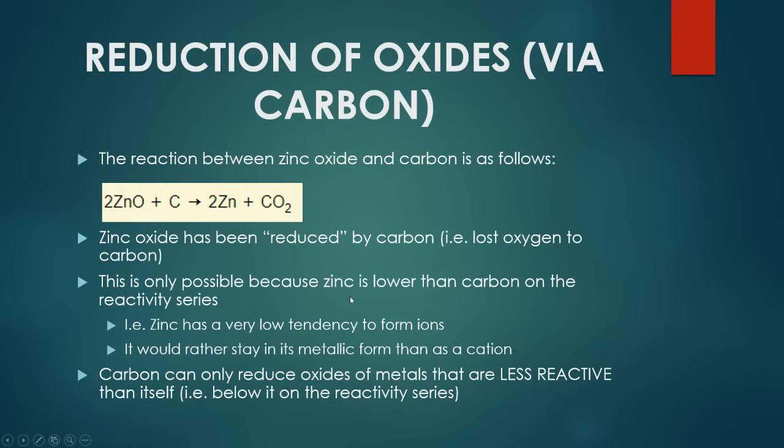This is only possible because zinc is lower in the reactivity series than carbon. Basically, carbon is more reactive than zinc. And remember, zinc being a fairly low metal of low reactivity suggests that zinc would much prefer to be in the elemental form rather than the ionic form because it has a fairly low tendency to form ions. That shows that because carbon is higher on the reactivity series than zinc, it has the capability to reduce zinc oxide.